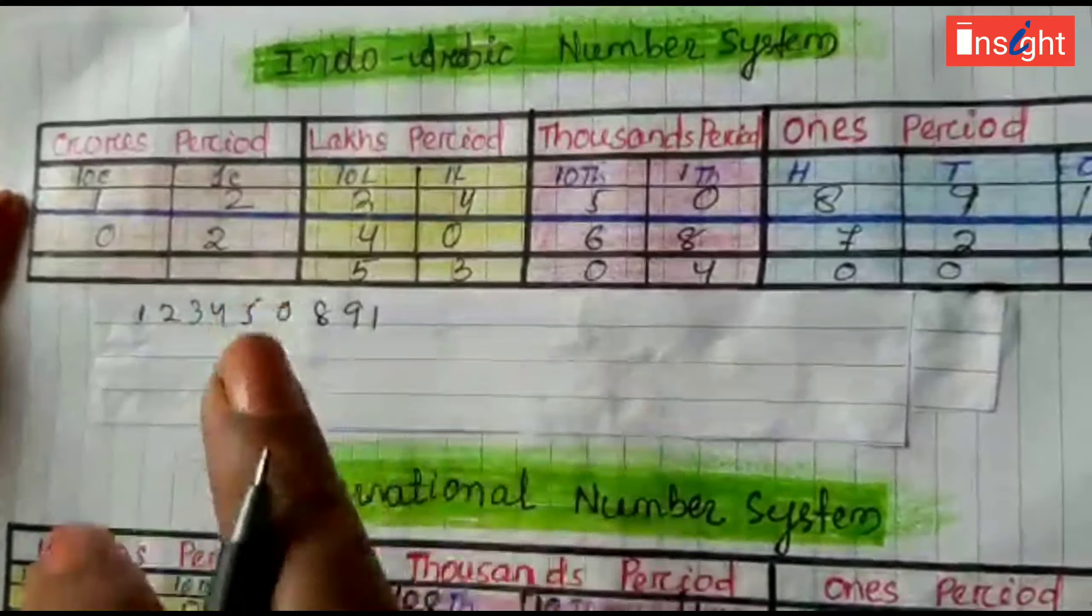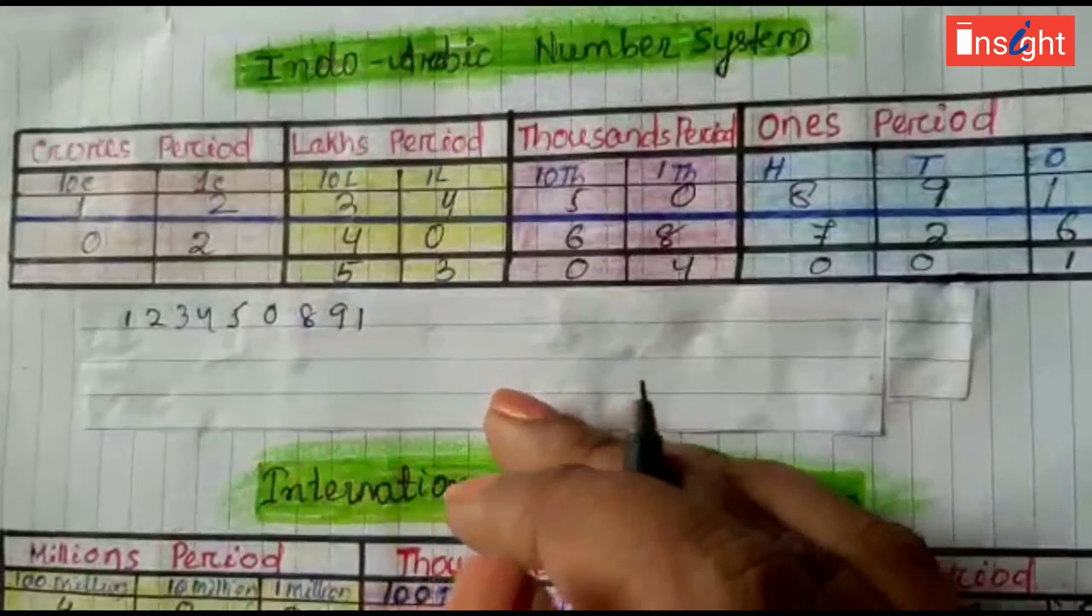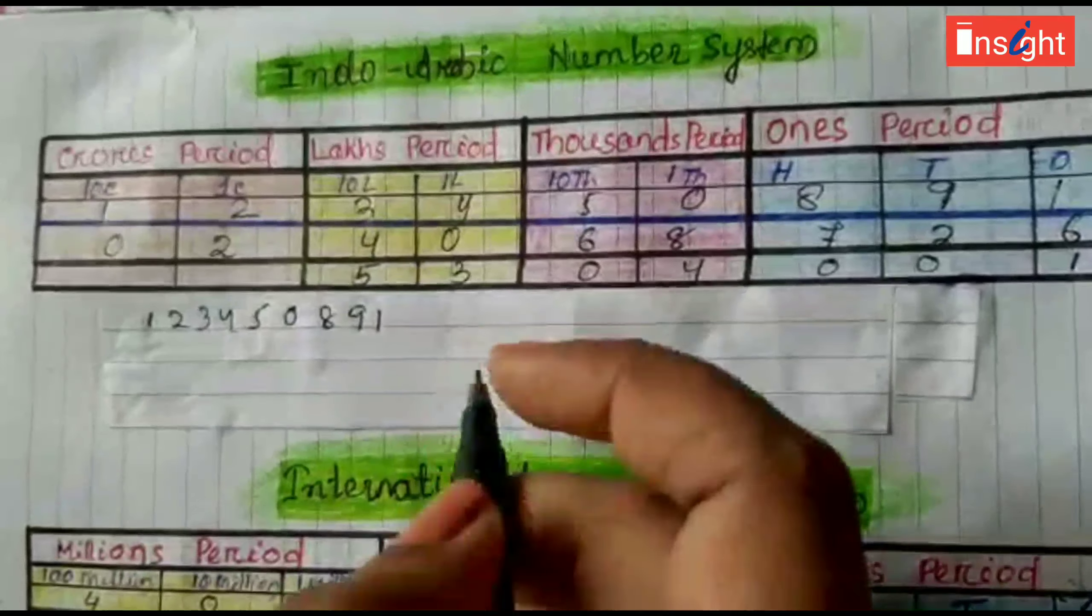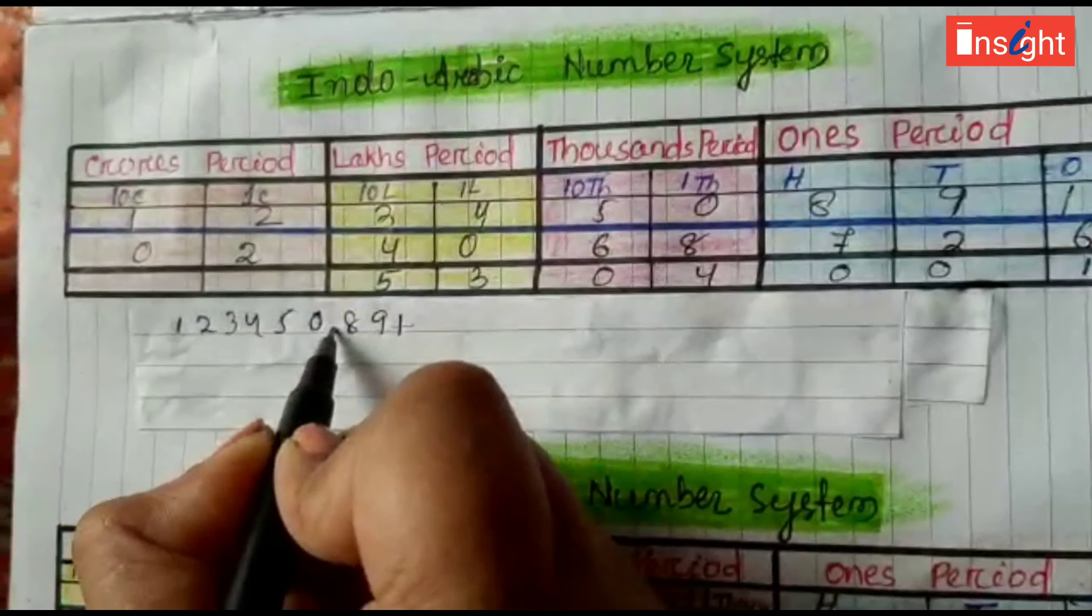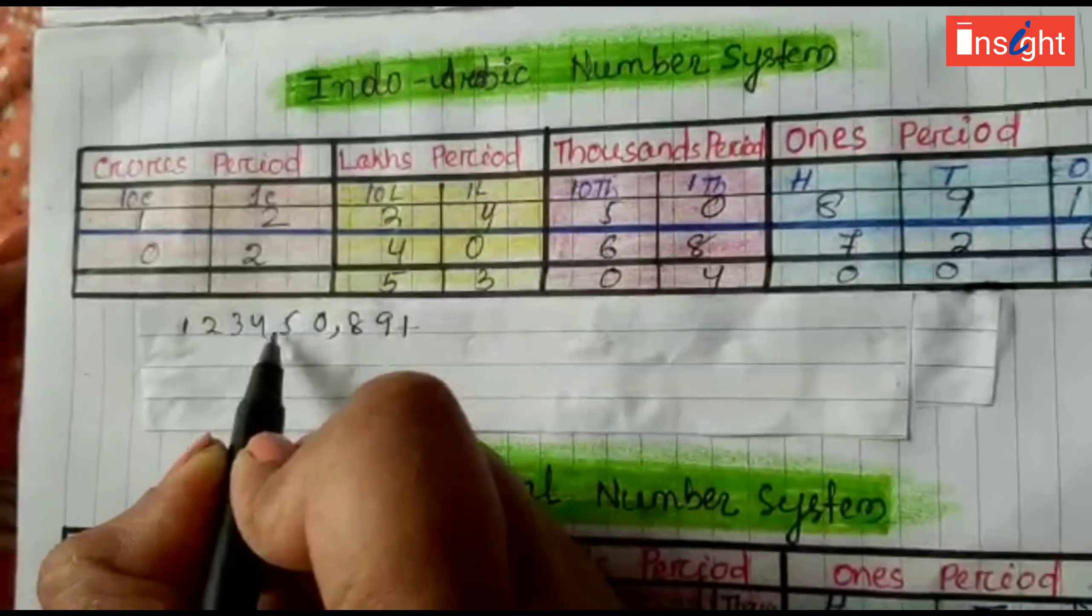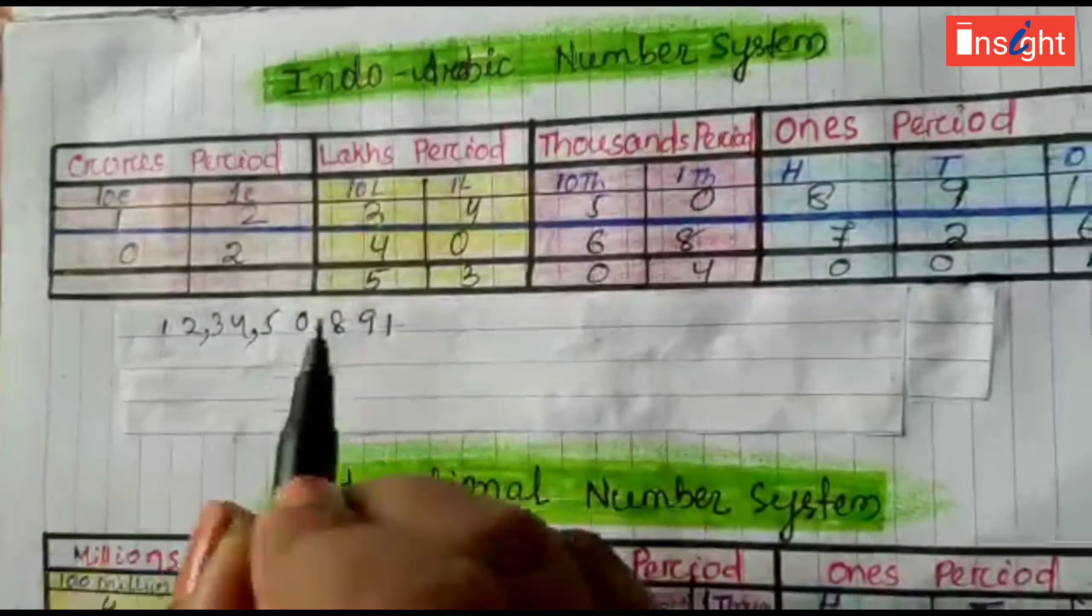So, the rules of giving commas in Indo-Arabic number system are: from the left side you go, from the left side choose three digits and put comma. Then choose two digits, put comma. Then two digits, put comma. Like this.